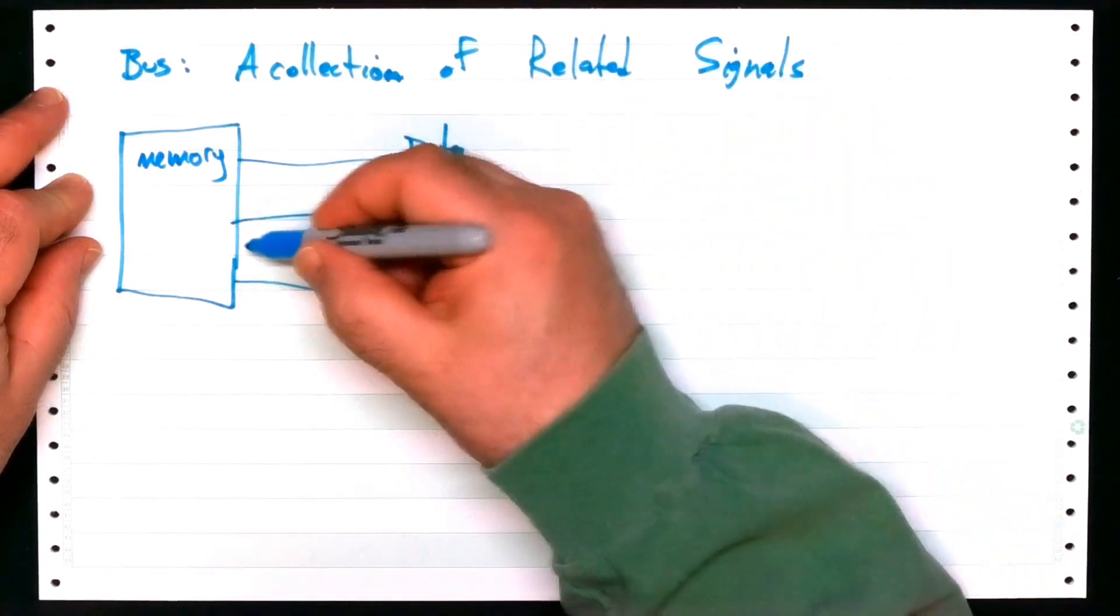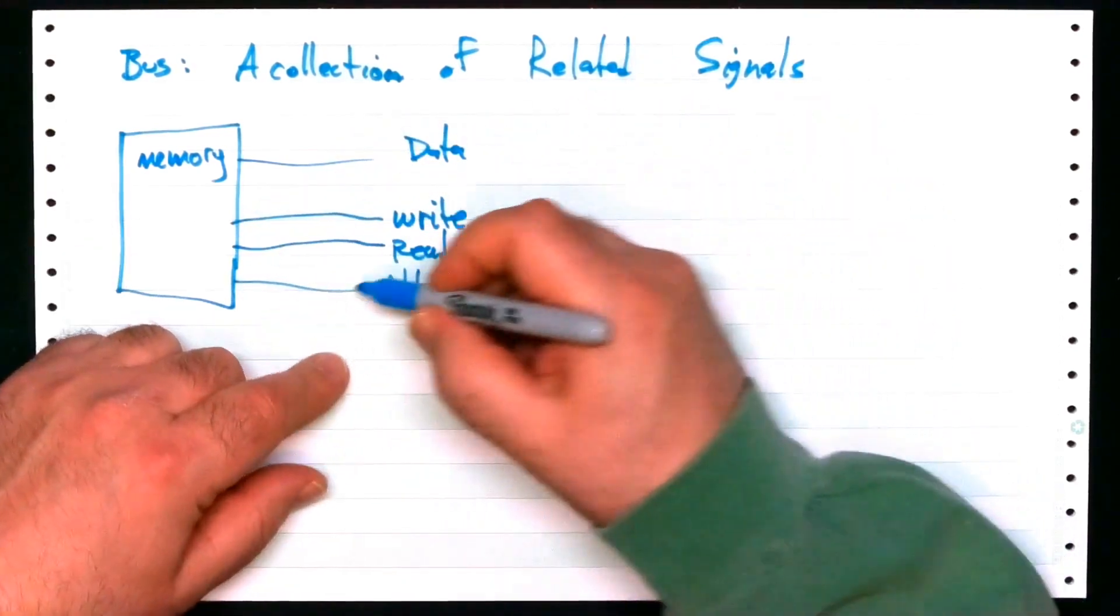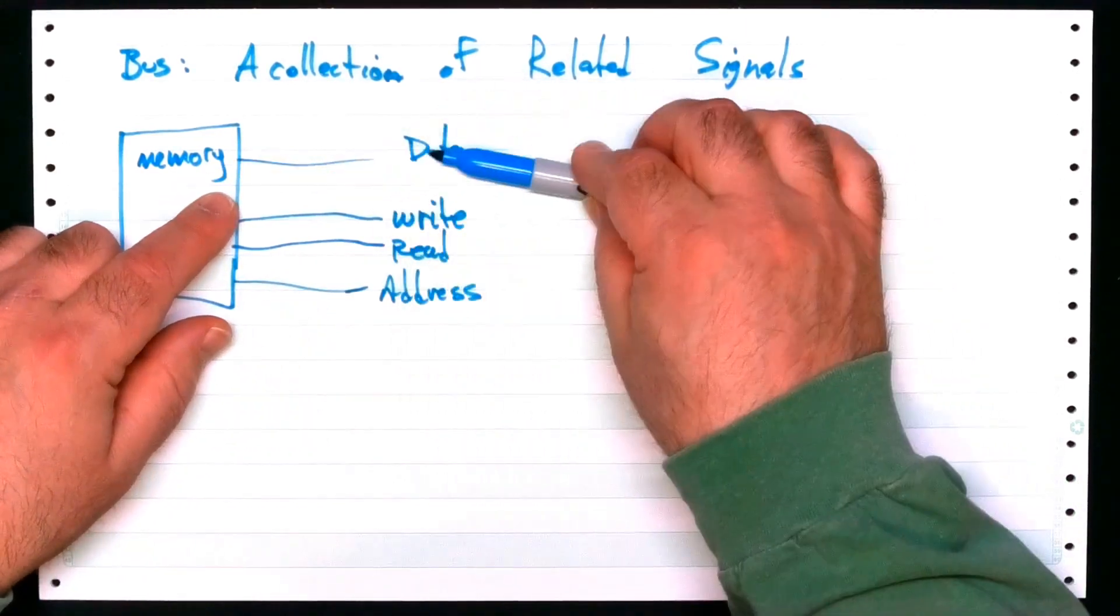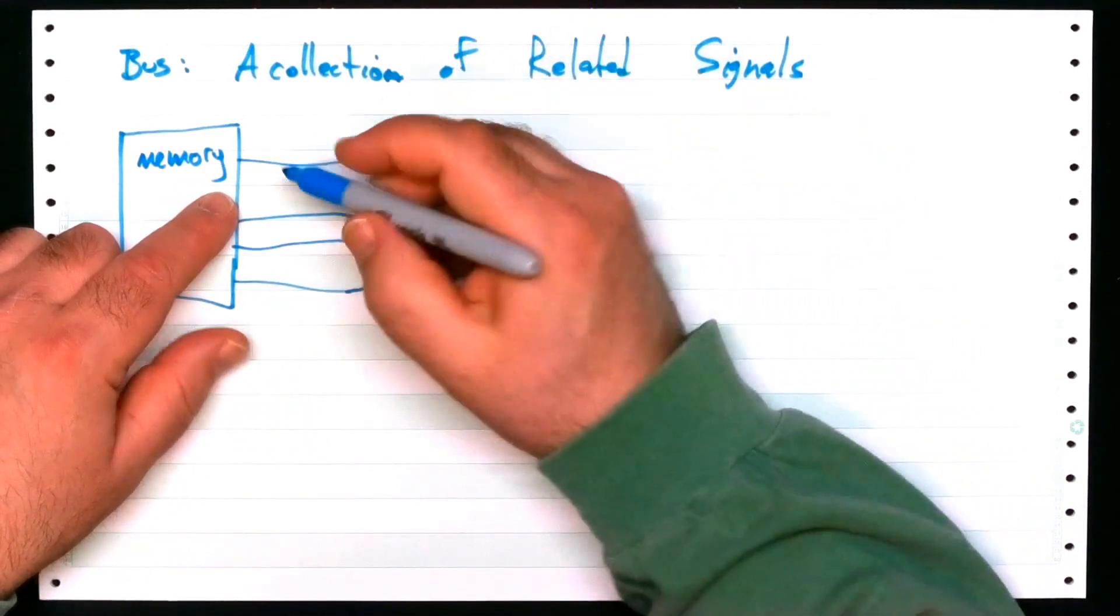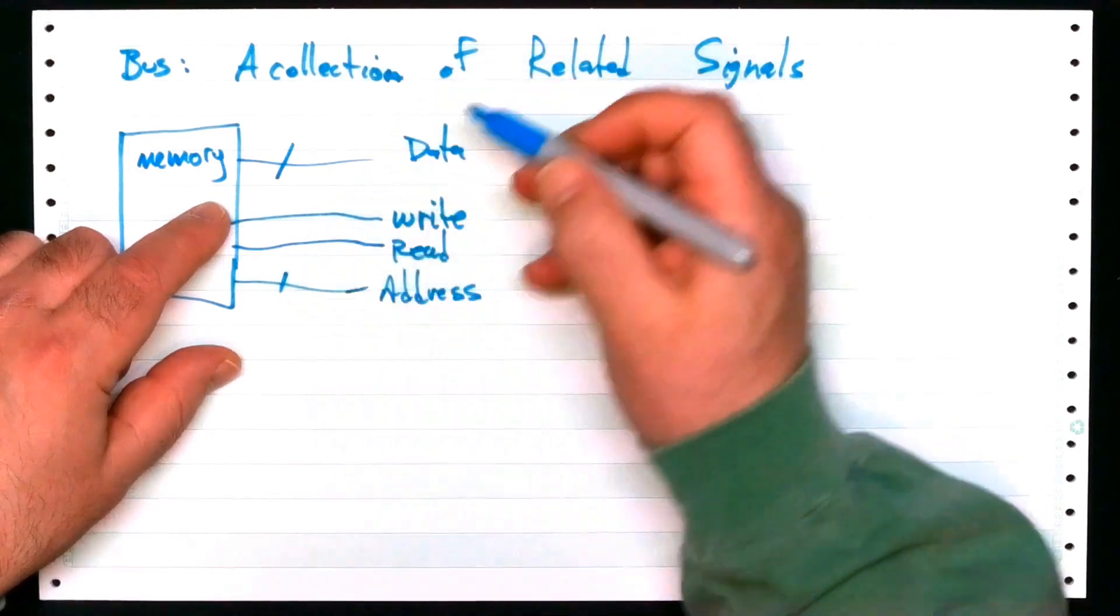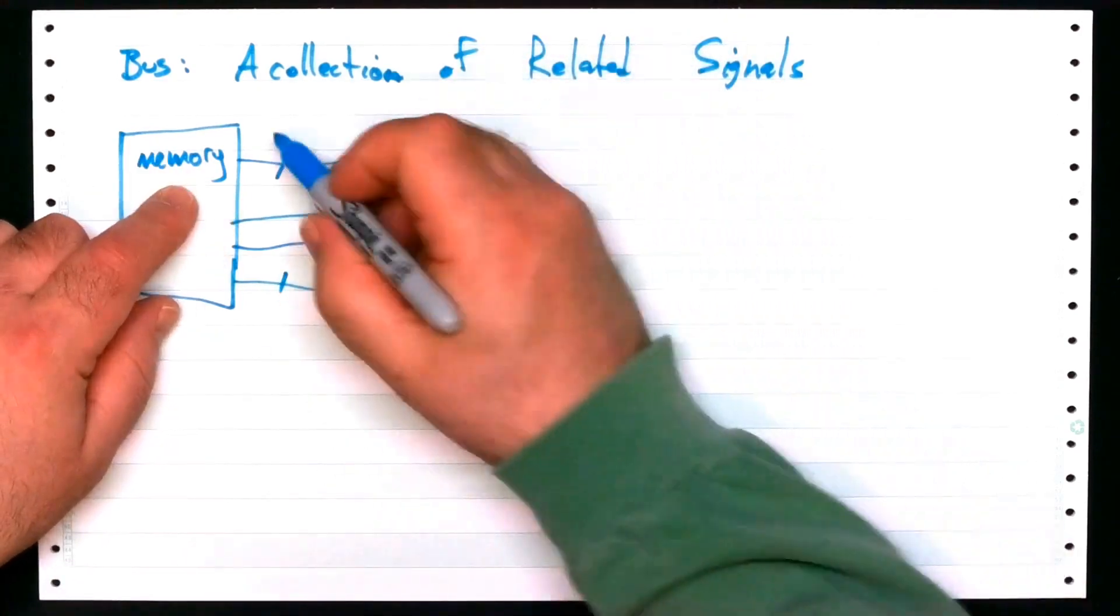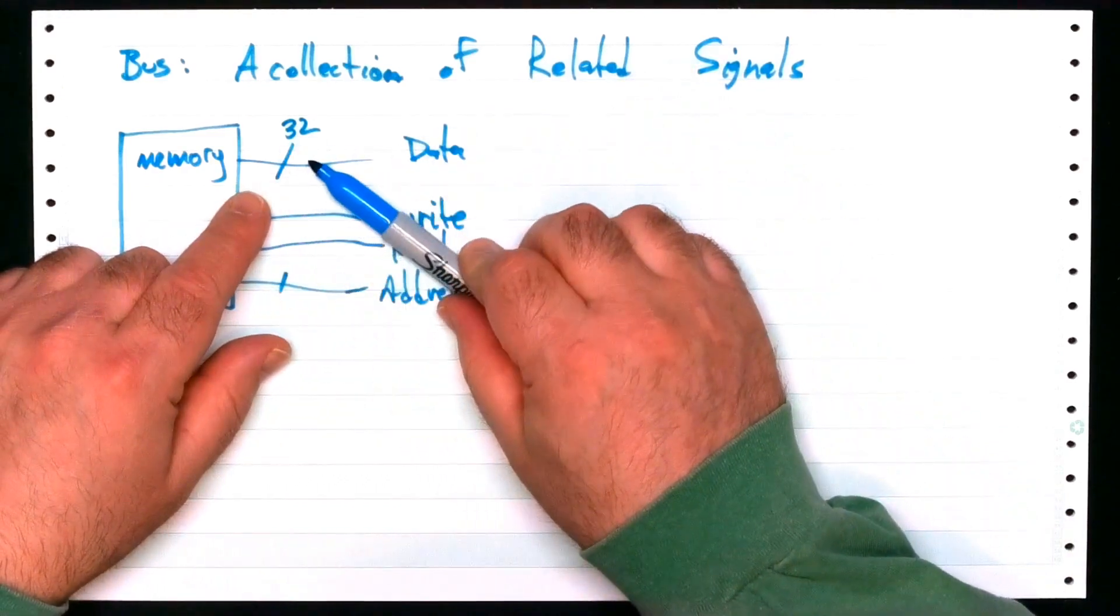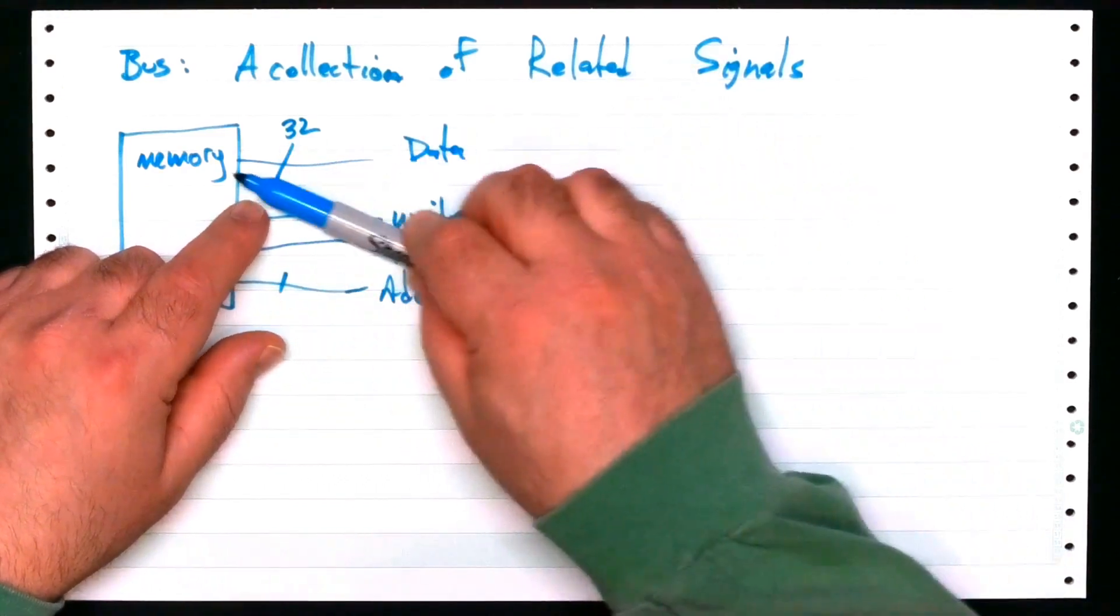So what happens? Very often, if you actually go buy a real piece of memory, it will have data signals. Now, I only drew one. We can put a line through it like this. Let's say this is a big memory, and it is 32 bits of data. You do this. There's 32 data lines, you would say.